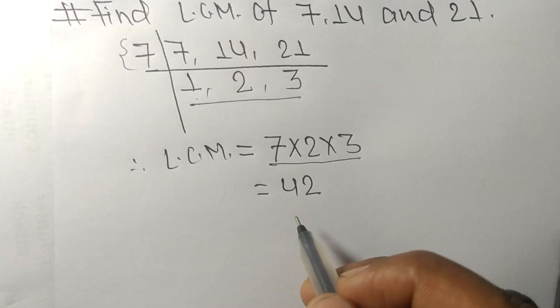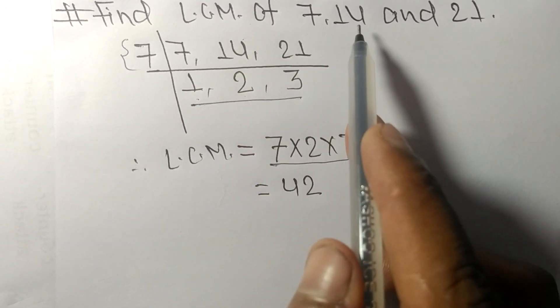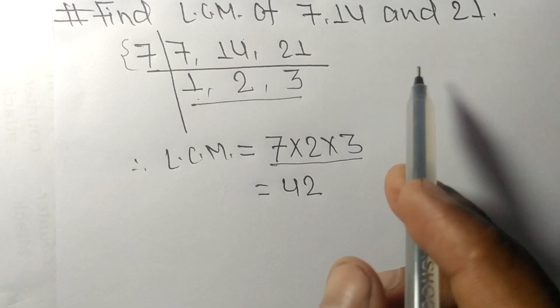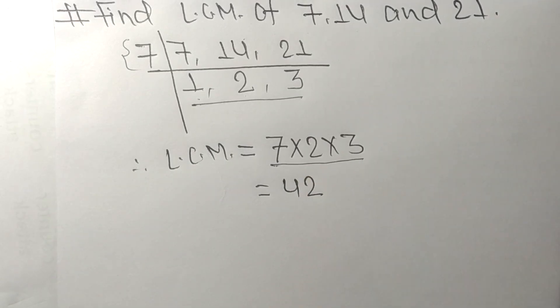So 42 is the LCM of 7, 14, and 21. So this much for today and thanks for watching.